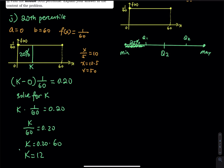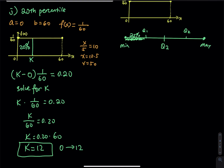So what does that mean? From 0 to 12 we have 20 percent. The meaning of this answer is: the probability that a student can answer a quiz question in the first 12 seconds is 20 percent.